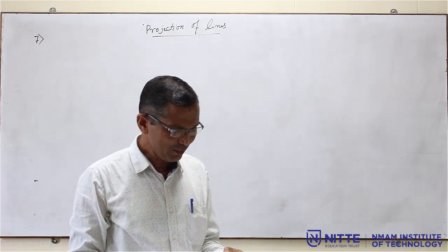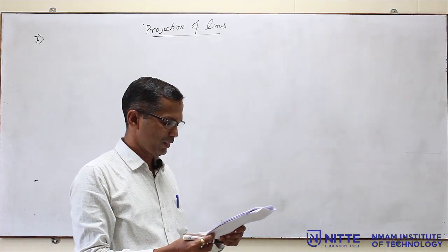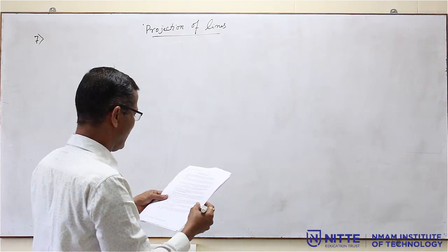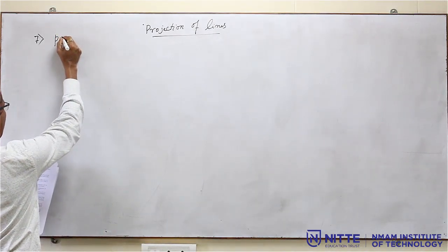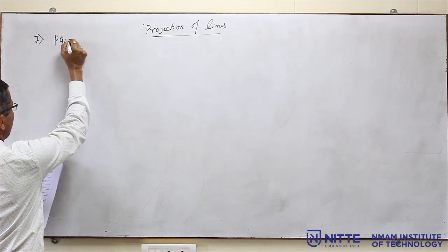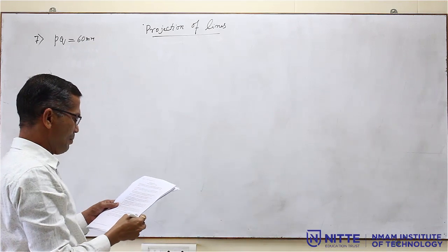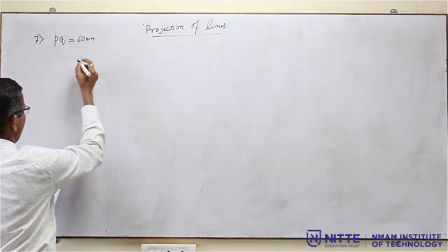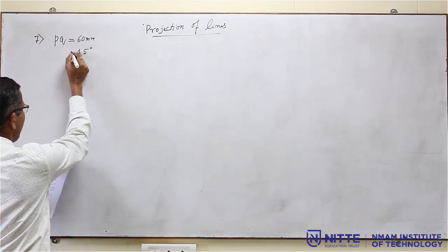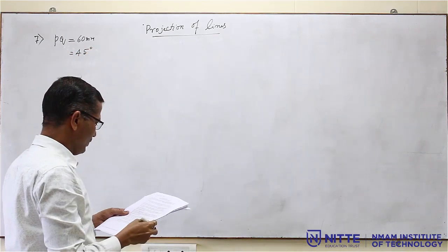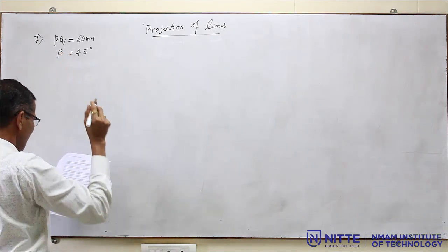In this problem, they have given the length of the top view. The top view PQ of the straight line measures 60mm. That means PQ is equal to 60mm, and it makes an angle of 45 degrees with the XY line. Now, what is this angle? The top view angle means it is beta — it is not phi or theta.